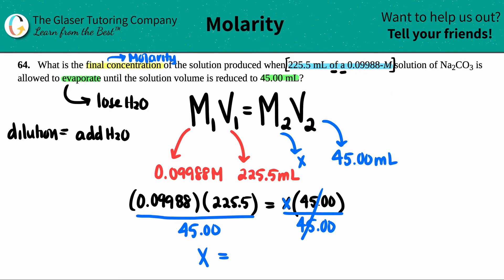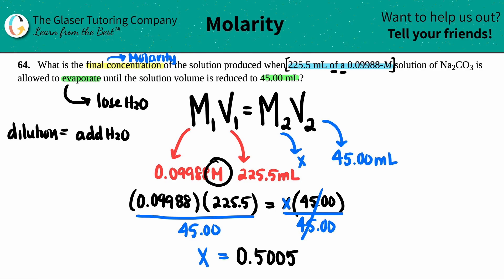Now we're going back to the answer. Let's see how many sig figs we got — four, four. All the numbers have four sig figs. So my answer should have four sig figs: 0.5005. And what's the unit for this X? Well, it was a molarity. Go back to the other molarity and see what unit they gave — they gave capital M. So I'm going to give capital M. Capital M for molarity. And that is the final answer.